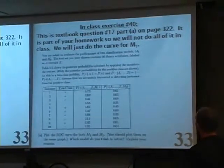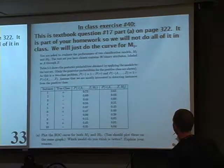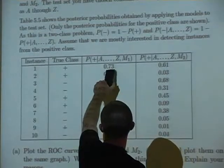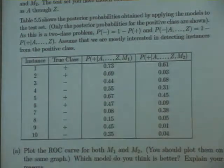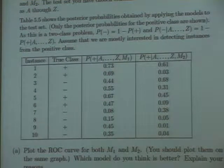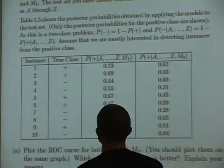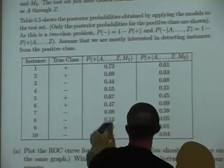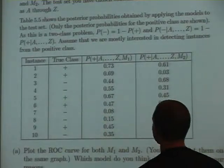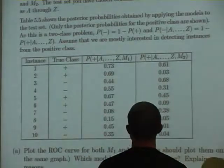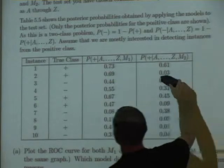For the textbook problem comparing classifiers M1 and M2: each outputs probability estimates per observation. The value 0.73 means classifier M1 thinks there is a 73% probability that observation one is from the positive class. What matters for the ROC curve is the ordering — if you can only call one thing positive, it will be the observation with the highest score. M2's highest score is 0.68, enabling similar comparison.